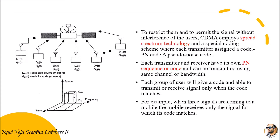In spread spectrum technology, a code is introduced — we call it the PN code, or pseudo noise code. The concept is that whenever the two codes at the transmitting end and the receiving end match, communication is done successfully. This is what we covered previously.